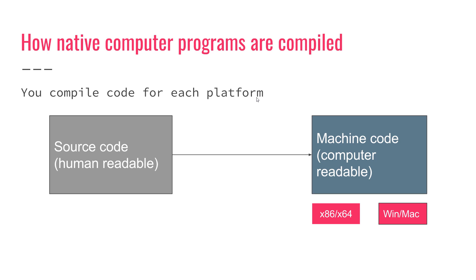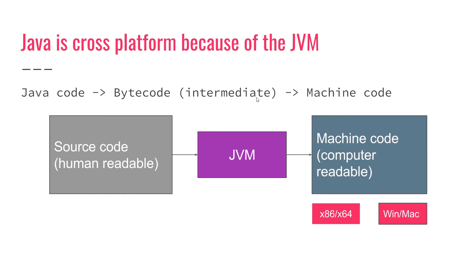Luckily for us, Java doesn't have this problem, and this is because of the JVM. You can visualize the JVM as a sort of man in the middle. We have the Java source code, and when we compile it, we don't get machine code directly — we get an intermediate language called bytecode. The JVM knows how to load this bytecode and transform it into machine code.